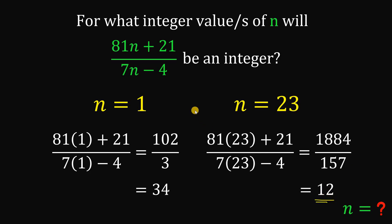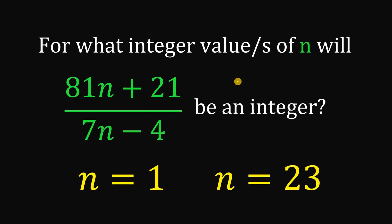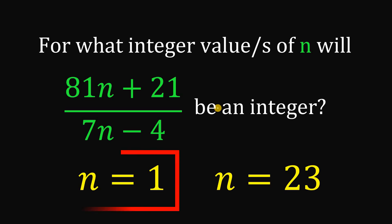Therefore, for what integer values of n will the expression (81n + 21) / (7n - 4) be an integer? The answer is n = 1 or n = 23. And as always, we are done.